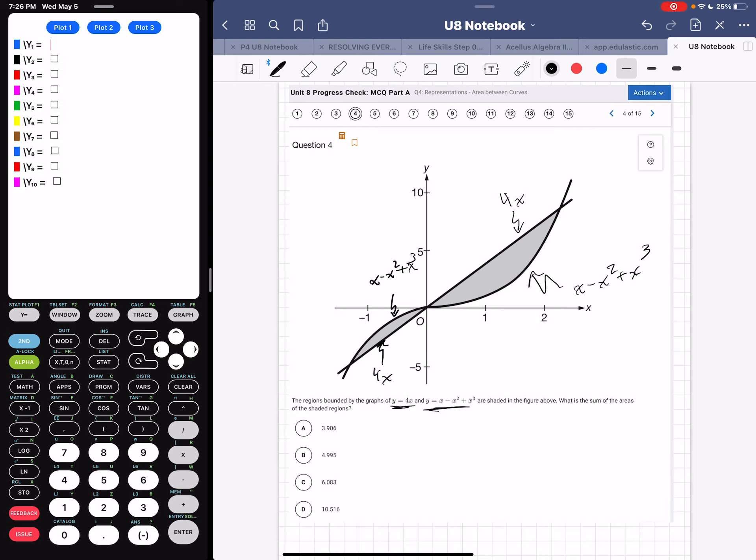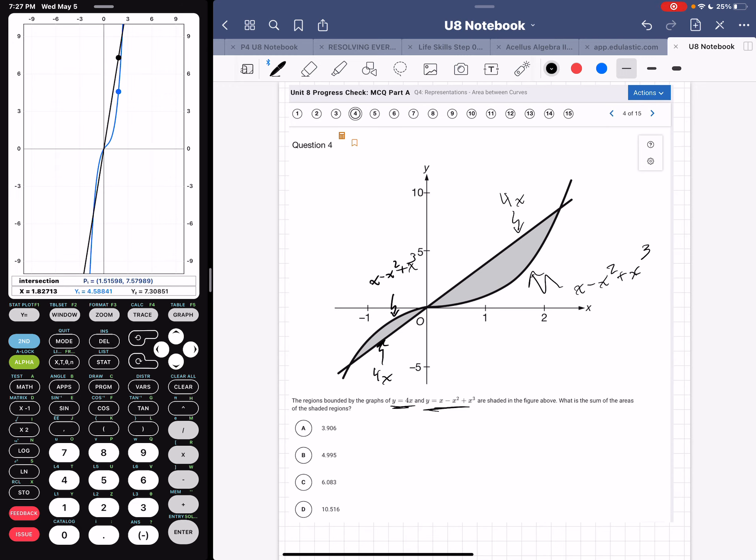Okay, so let's put those in our graphing calculator really quick. So let me clear these out right here. Let's go x minus x to the second power plus x raised to the third. And then for my other one, it's 4x. Very simple. Hit my graph. Hey, it looks just like that one. My window is a little different on my graphing calculator, so it doesn't look exactly like it, but we're gravy, we're gold.